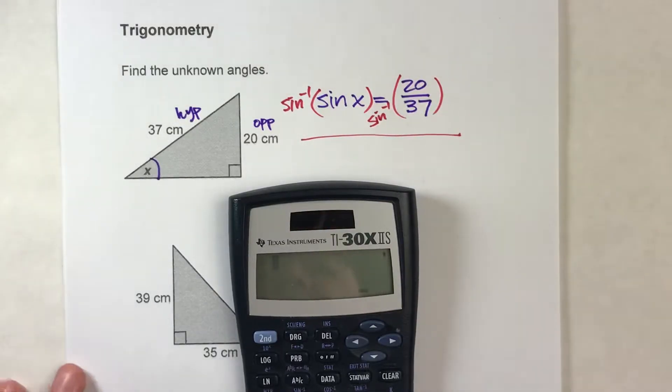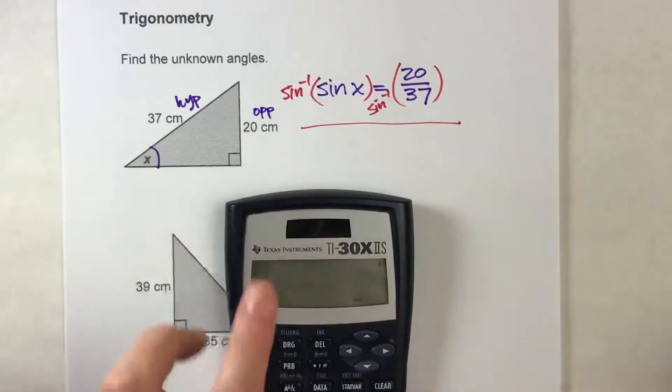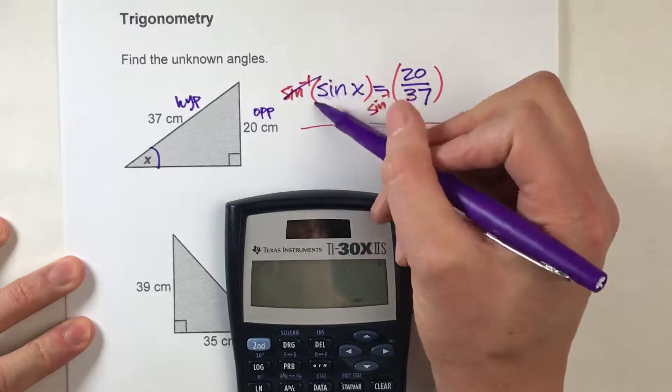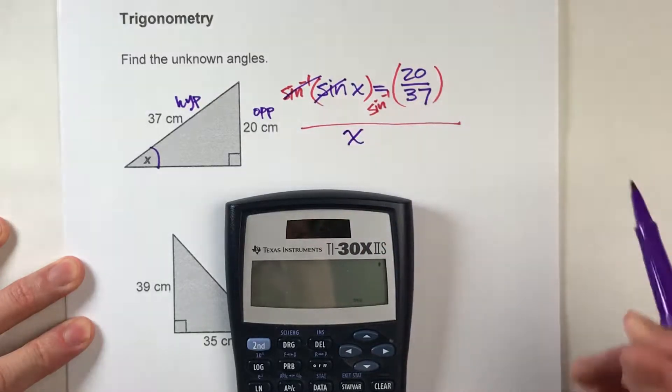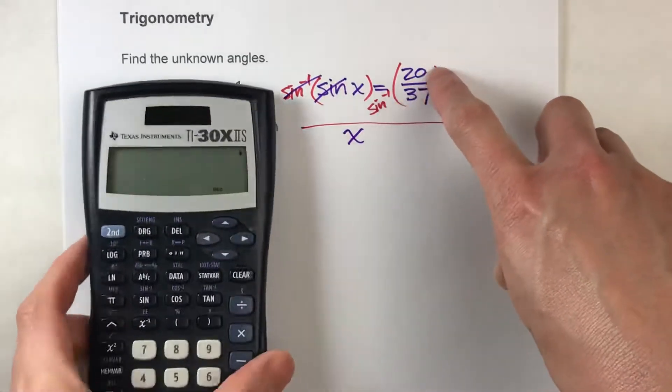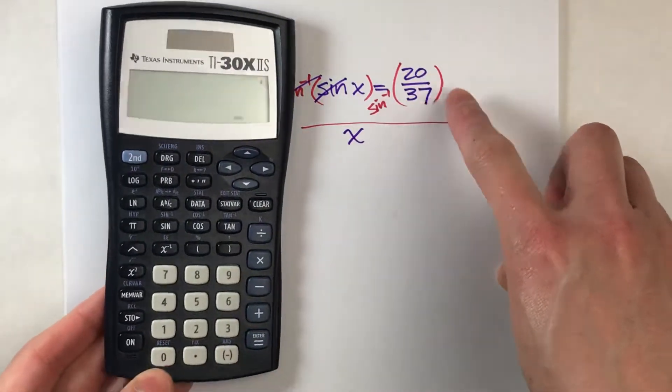We're taking the inverse sine of both sides of your equation. Now, when you take the inverse sine of sine, they undo each other, and you're going to get x. On the other side, we're going to take the inverse sine of whatever 20 divided by 37 is.